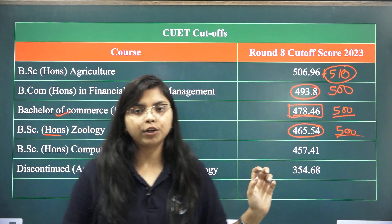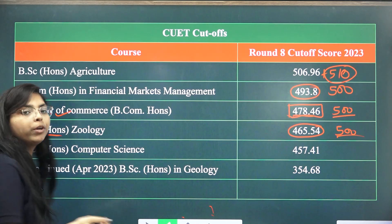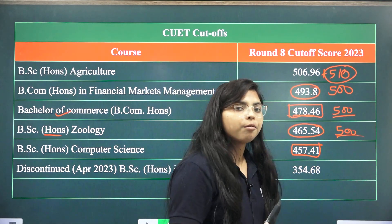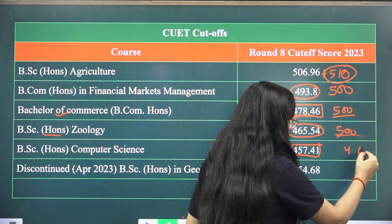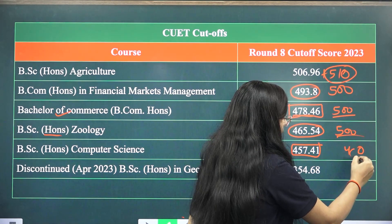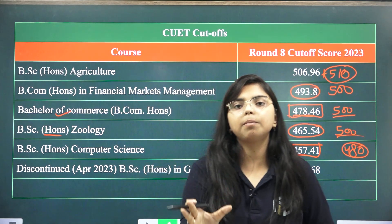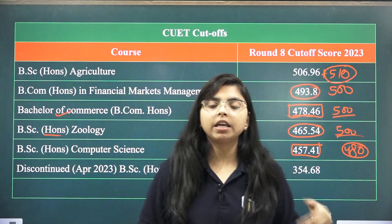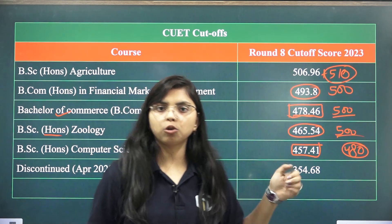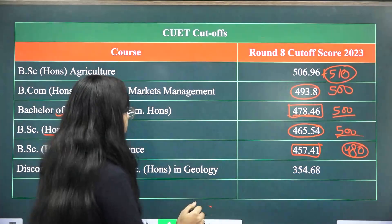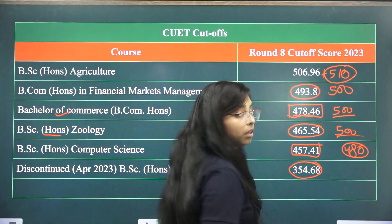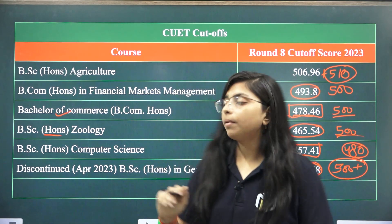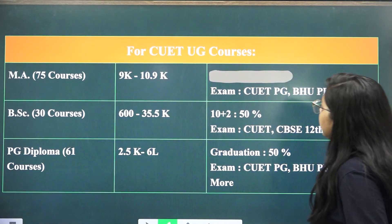For BSc Honours in Computer Science, the cutoff last year was 457. So we should target a minimum of 480. Our goal should be to score 90% to 95% to secure admission comfortably. For BA Honours in Geology, if you scored around 354, you should target approximately 500 to be eligible for any good university.